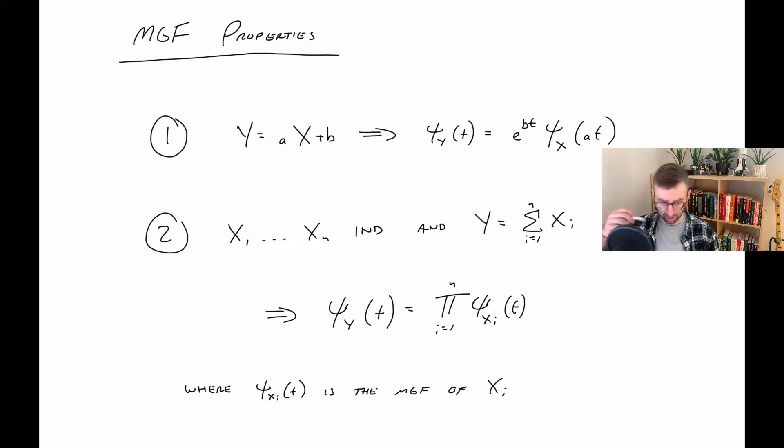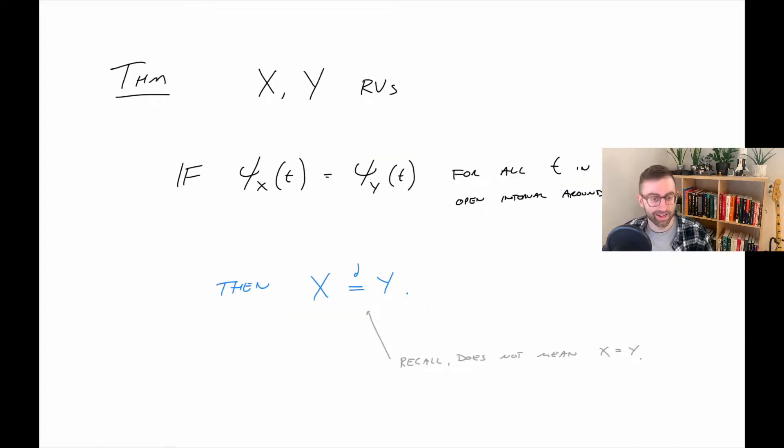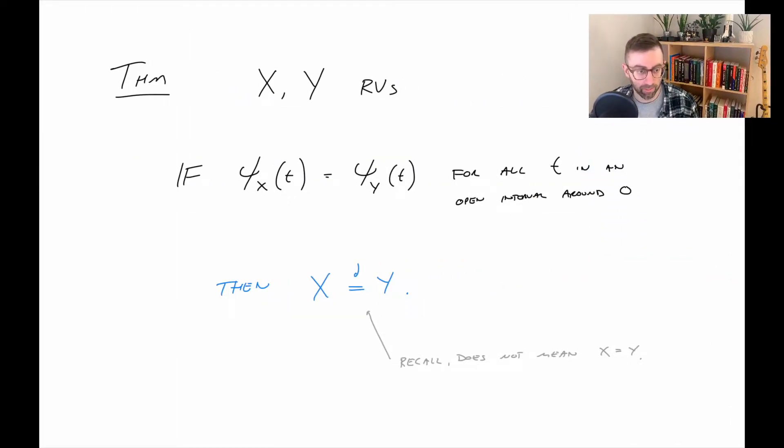Some other things we'll need are these two properties of moment generating functions. That is, what happens if you do an ax plus b transformation, and what happens if you add up a bunch of independent random variables, what is the new moment generating function of that summation? Another very important thing is that if you have two random variables with the same moment generating function, then they are equal in distribution. Not necessarily equal, but we care about convergence in distribution here.